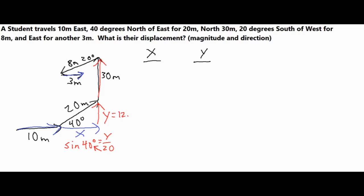That gives us 12.86 meters for our vertical component. For the horizontal x component, we use cosine of 40 degrees, since cosine gives us the adjacent side divided by the hypotenuse of 20. Multiplying both sides by 20 cancels the right side and moves it to the left, so 20 times cosine of 40 gives us 15.32 meters for our x component.